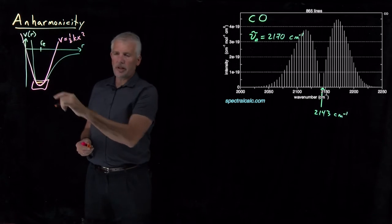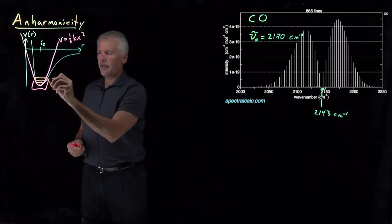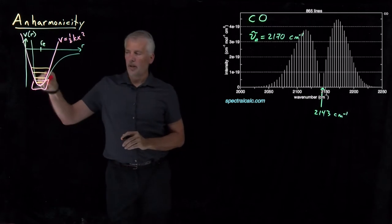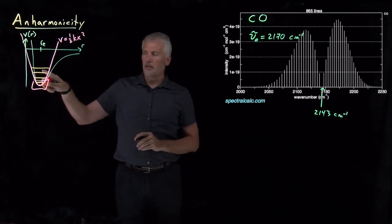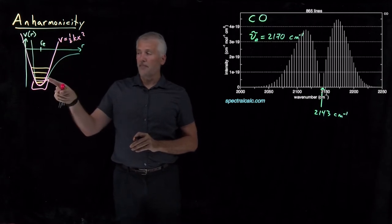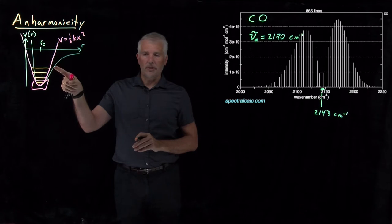So for the lowest energy level, it might work okay. The next energy level up, the next energy level up. The higher we climb in this well, the worse the estimates of the energies get when we use the harmonic oscillator model to predict the energy, because the real potential energy curve becomes more and more different as we climb that well.